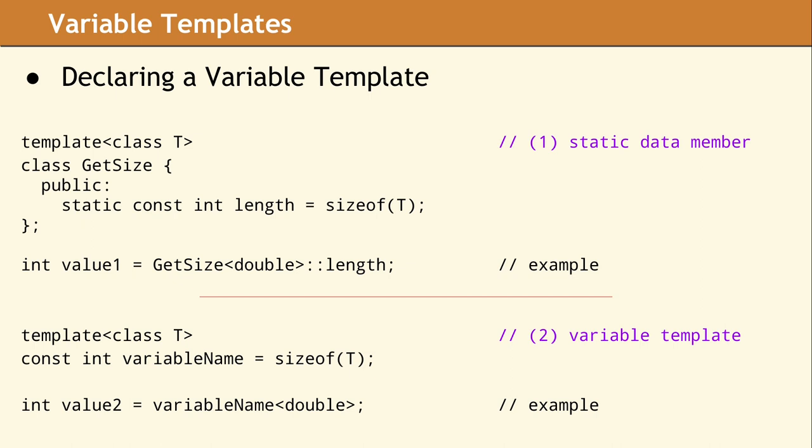From the very beginning of C++, the template keyword has been used with functions and classes. Variable templates were added in C++14, and they provide a way to simplify the syntax. They do not really add any new functionality to the language.